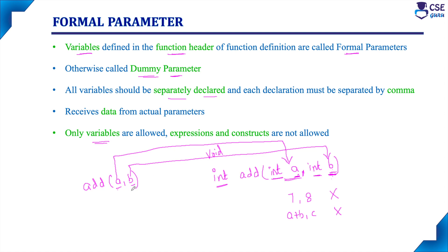To summarize: actual parameters are used in the function call and do not need to specify data types. Formal parameters are used in the function header of the function definition and must be specified along with their data types. Actual parameters send values to formal parameters, and formal parameters receive those values. Actual parameters are also called arguments; formal parameters are also called dummy parameters. This is the concept of actual and formal parameters.